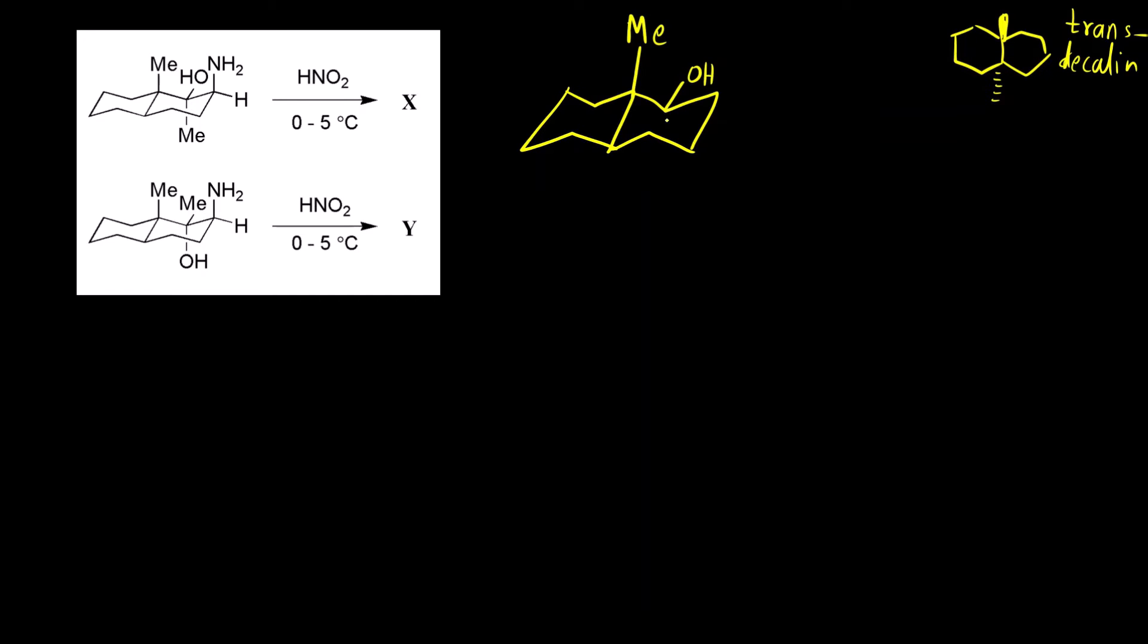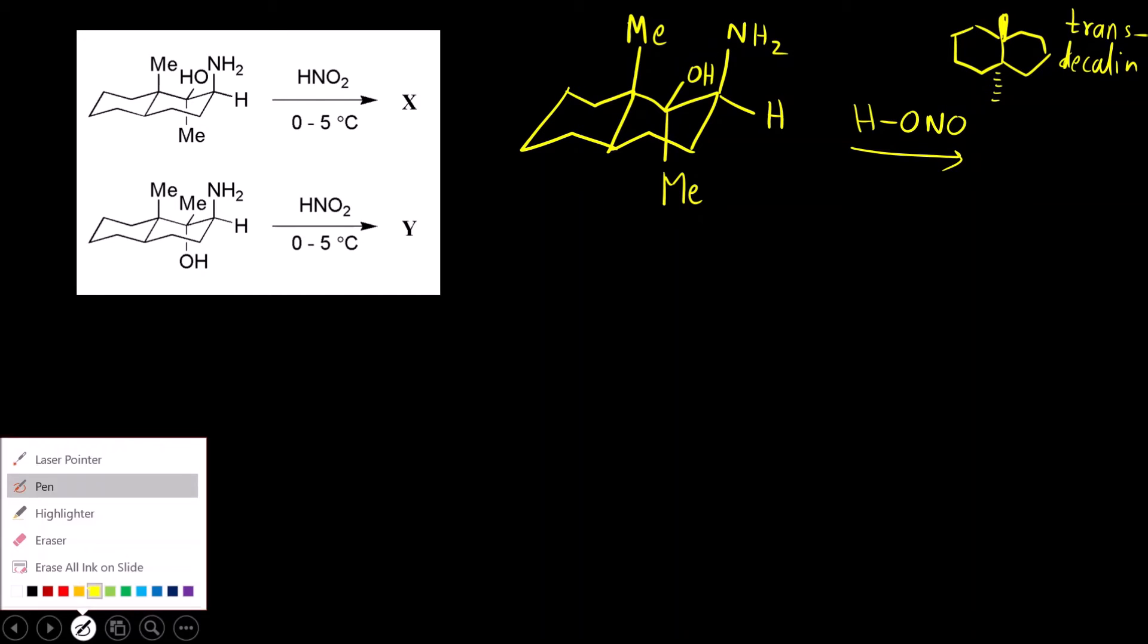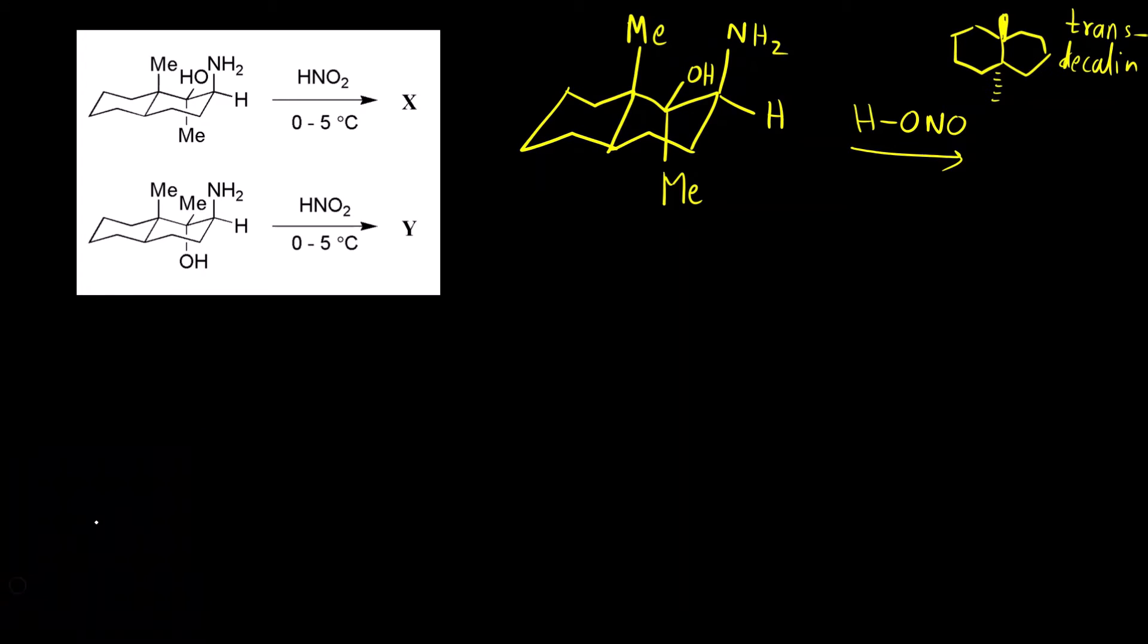Me OH. Here we have methyl. Above the plane here there is NH2 hydrogen. First thing what we are doing is we are reacting it with nitrous acid. What will happen? Now the question is with which atom will react? Oxygen will react or nitrogen will react? We know oxygen is more electronegative. Which one will be protonated? Nitrogen. Nitrogen will be protonated like this.